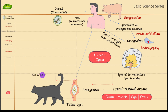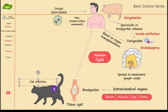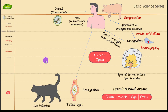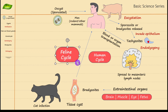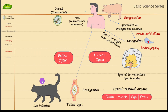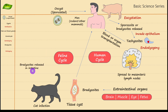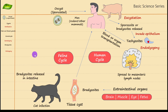Now, what happens when the cat gets the infection — this is the feline cycle. As mentioned, sexual reproduction will happen in the cat. This cycle covers all organisms in the feline group; we use cats as the example because they live very close to humans. Bradyzoites are released from tissue cysts in the intestine of the cat — that is step one.